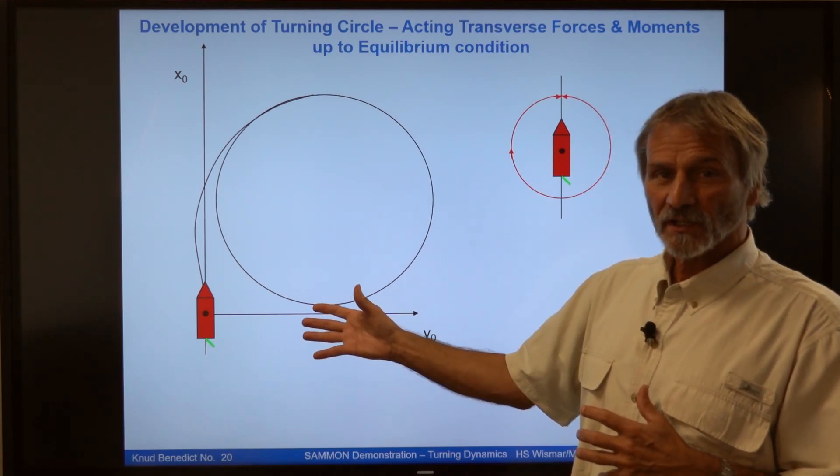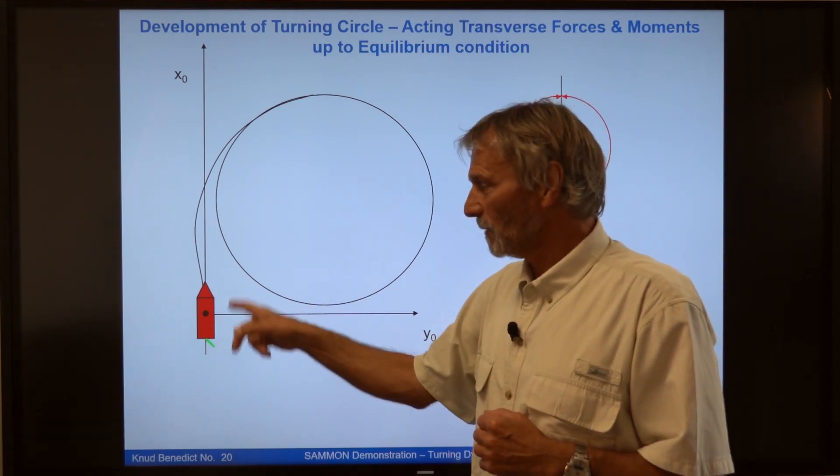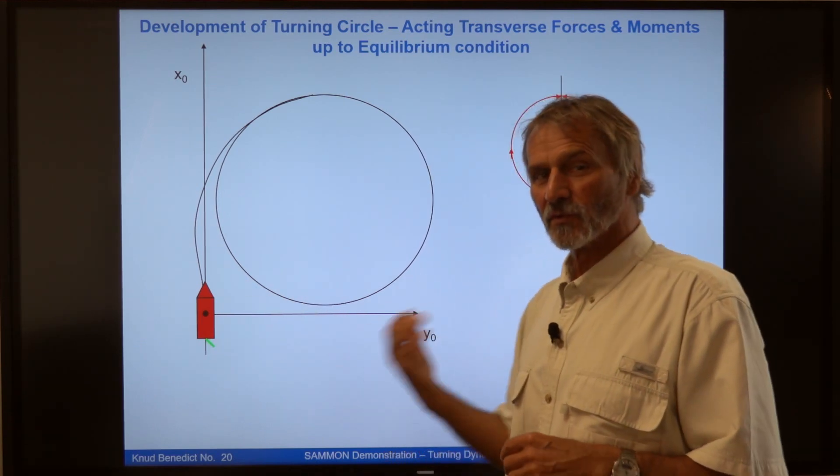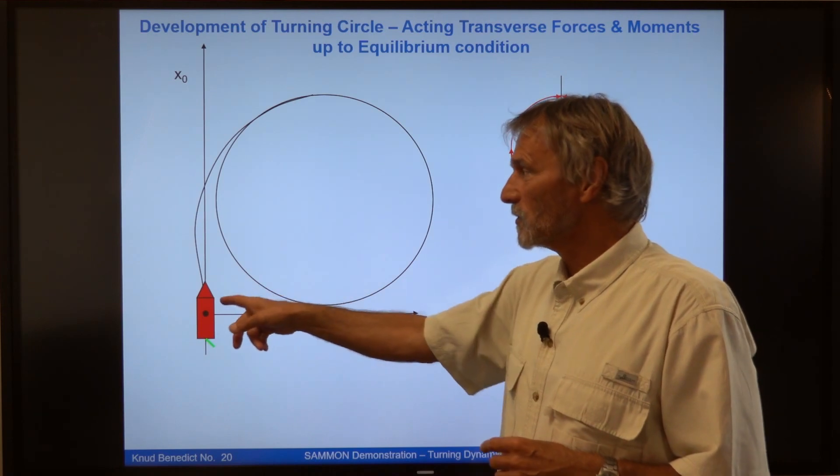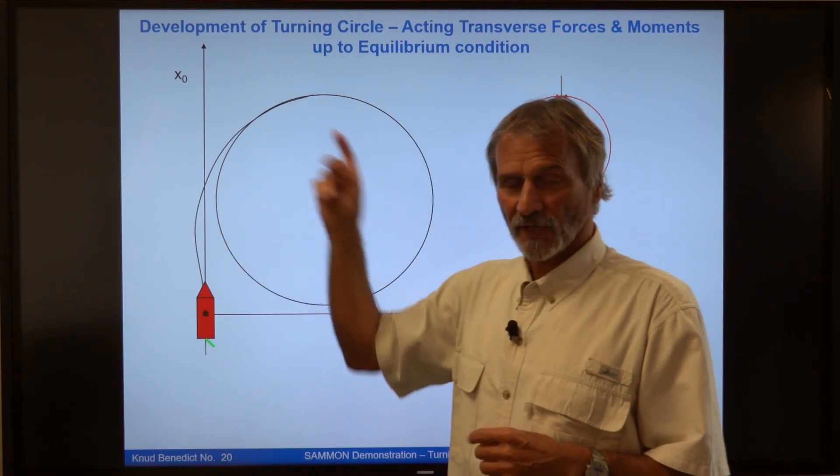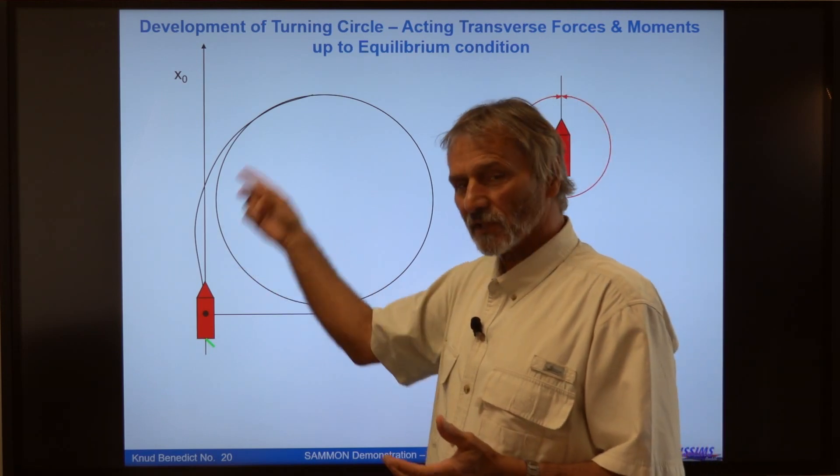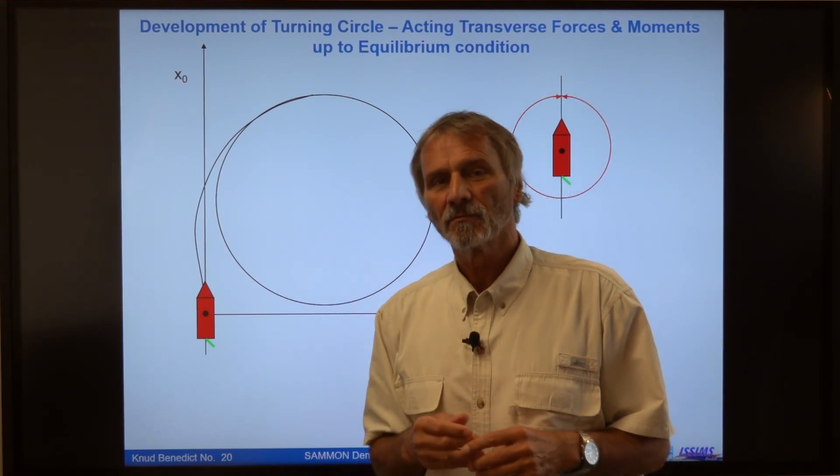And what we see here is there's a ship and the rudder is already set to starboard and this is the future track of the vessel. The question is why it comes that the ship is doing this motion.